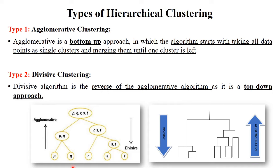First, agglomerative clustering always forms clusters from bottom to top. See here — there are single clusters at the bottom: P, Q, R, S, T. Agglomerative clustering combines P and Q into one cluster. Similarly, S and T combine into an S-T cluster. Then R is combined with S-T, and finally all clusters are combined into one cluster: P, Q, R, S, T. So in this way they work from bottom to top.